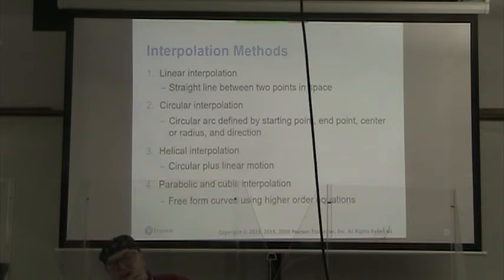Interpolation: we can have linear interpolation, and that is just a straight line between two different points in space. We can have circular interpolation, where our circular arc we define by our starting point, our end point, our center or radius, and the direction. In helical interpolation, we have circular plus linear motion. And then we have parabolic and cubic interpolation, where we're using higher order equations to define the curves surface that the machine will follow.